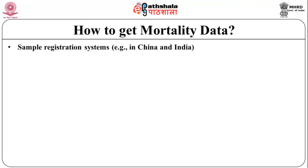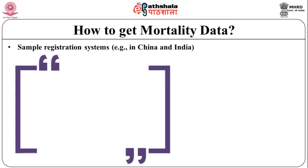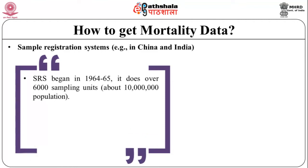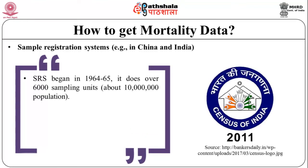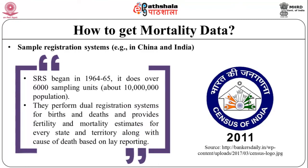Next, we have the Sample Registration System, for example in China and India. In India, it began in 1964 to 1965, covering over 6,000 sampling units — about 100 lakh population. It maintains a registration system for births and deaths, and provides fertility and mortality estimates for every state and territory. Cause of death is based on lay reporting.